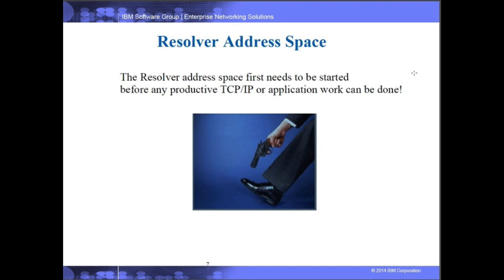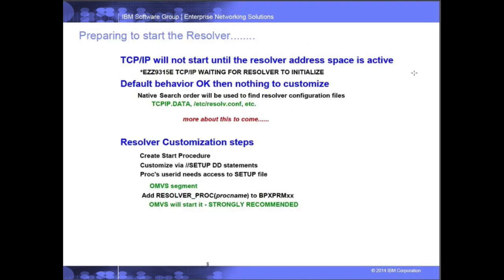The Resolver address space is a very integral part of CommServer. You can't do any productive work in either TCPIP or in an application until the Resolver is started. TCPIP will not start until the Resolver address space is active — a message is put to the console indicating it's waiting. You can run the Resolver address space with default settings, in which case it uses a native search order to find all TCPIP.data files needed by applications.